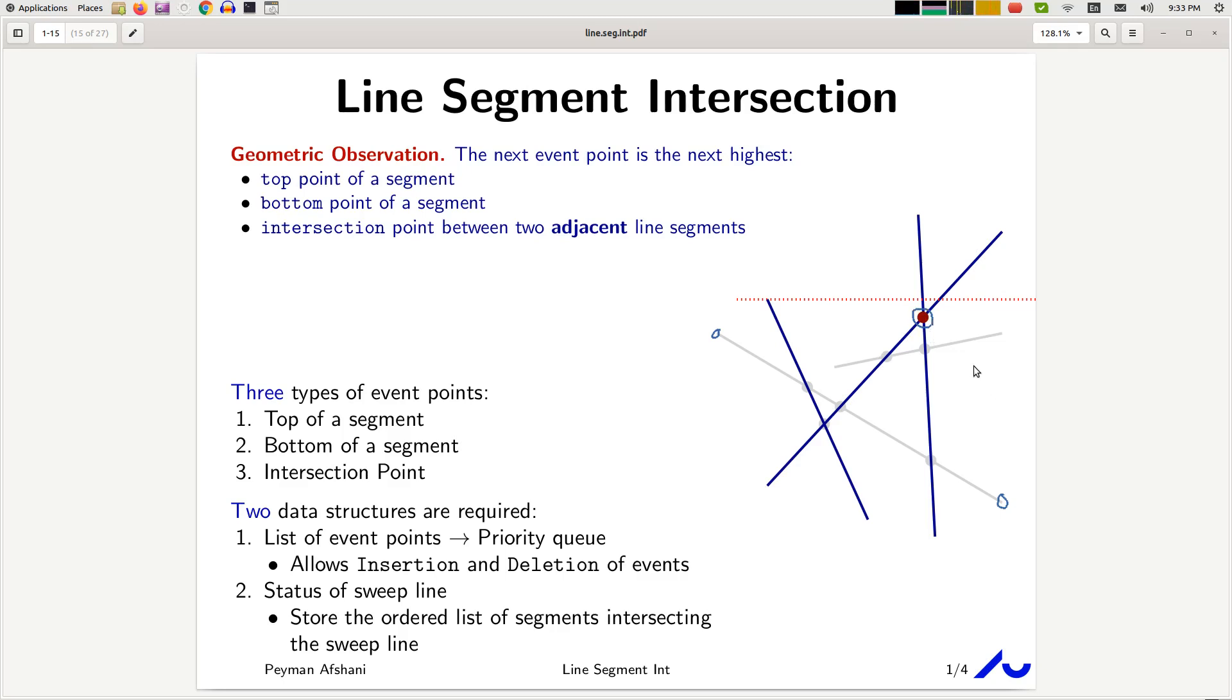What this lemma says is that you only need to check the intersection points of the two adjacent line segments. In other words, if this is your sweep line, and you have these, and let's say these are all the intersection points that exist in the picture, so these are all the intersection points.